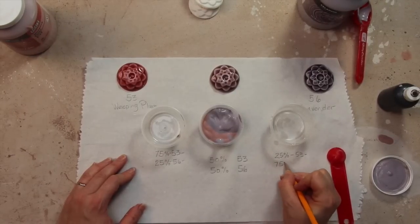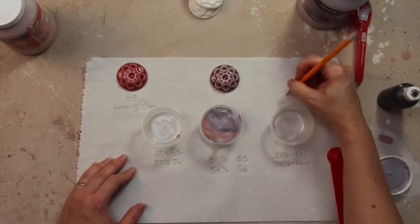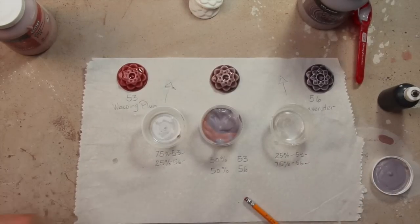On the other side, we will have 25% Weeping Plum and 75% Lavender.